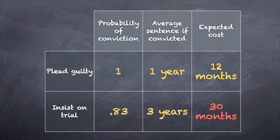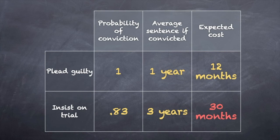Judges who typically set the sentences are not supposed to punish people for putting the state to its proof, but you'd never guess that based on the statistics. So multiply the left column by the middle column and you get what's in the right-hand column — the expected value of your options. If you plead guilty, you can expect to spend, say, a year in prison. If you insist on a trial, you can triple that — you slightly lower the average chance of conviction, but you triple the average sentence.